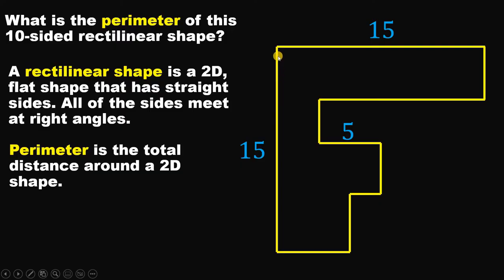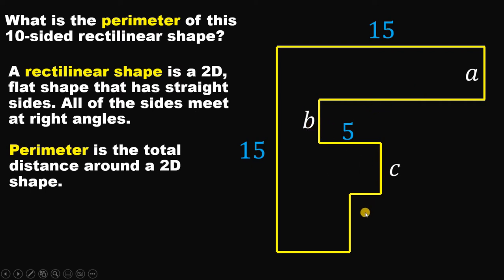To answer this question, what we're going to do is add all of the sides. But the question is, we don't have the measure for some sides. So let's call them: this side is A, this side is B, this side is C, this side is D, this is E, this is F, and this is G.